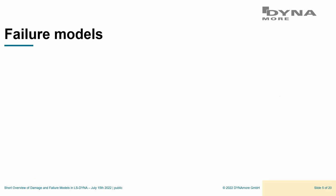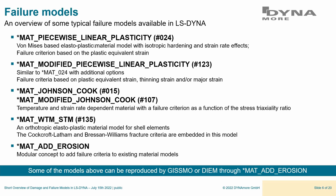Now let's look at failure models. In MAT24, there's a very simple failure criterion based on equivalent plastic strain — just one entry in the keyword. It's popular because it's easy to use. MAT123 is basically an enhancement of MAT24 regarding failure criteria: in addition to equivalent plastic strain, you have thinning strain at failure and major in-plane strain at failure.